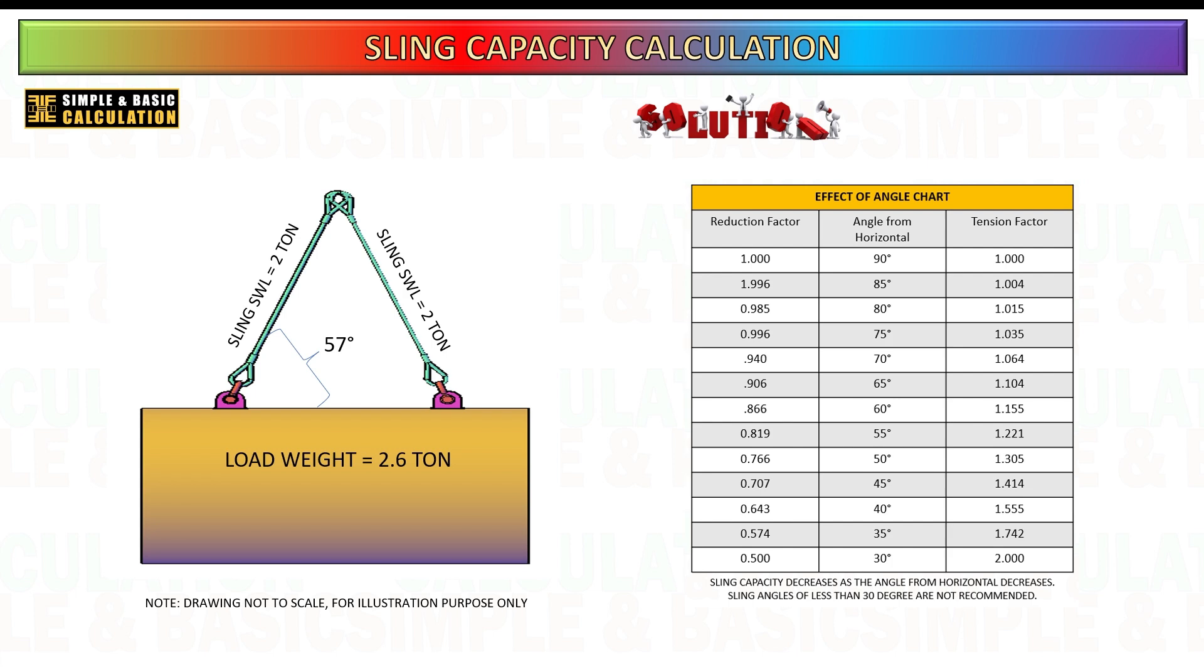Choose the next higher value, on the chart, find the row or column that corresponds to your sling angle. Since charts typically provide reduction factors for a range of angles, you should select the reduction factor corresponding to the next higher angle listed if your exact angle is not available. This practice ensures a more conservative estimate, which enhances safety.